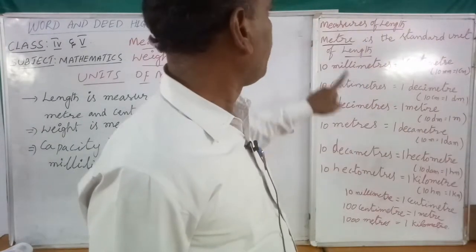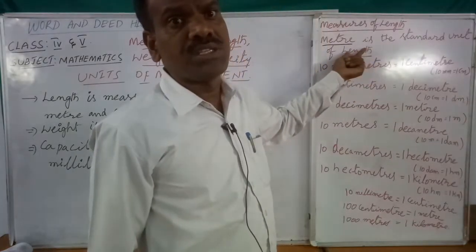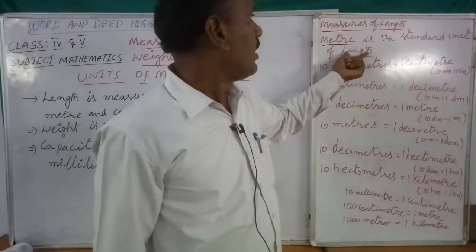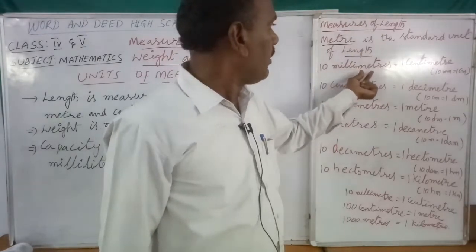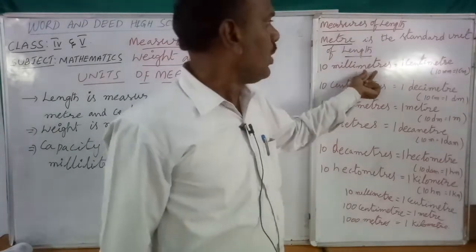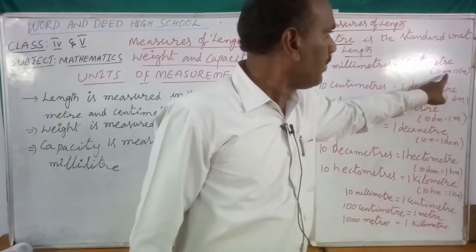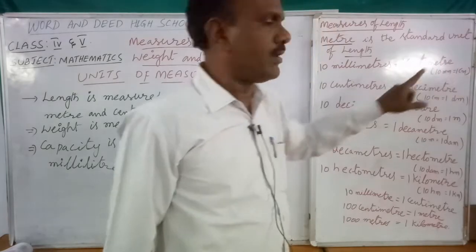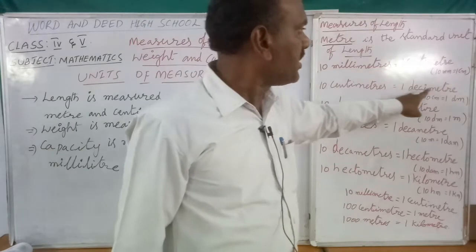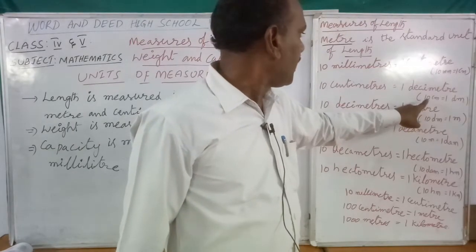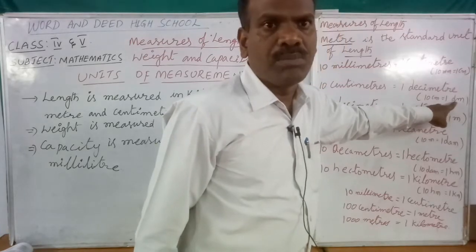Now, measures of length: meter is the standard unit of length. Next, 10 millimeters equal one centimeter — millimeter is denoted as mm. So 10 mm equal to 1 centimeter.